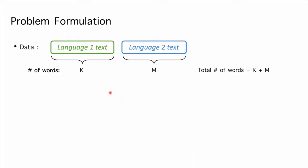Consider two languages in code-switching language modeling. The numbers of words are K and M in the vocabulary of each language. And K plus M is the vocabulary size in the corpus.